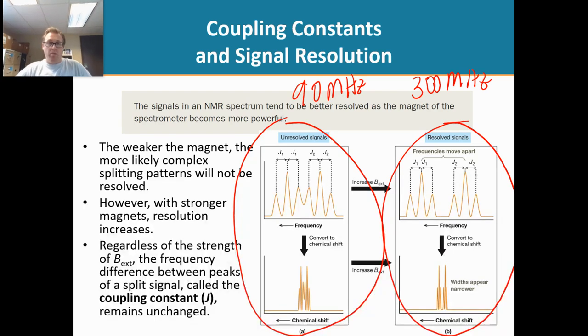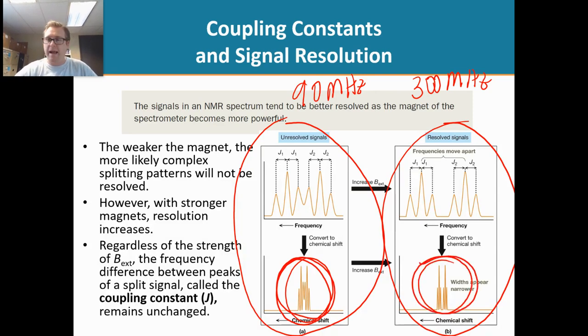So getting a more powerful magnet, paying the extra money, is going to offer us better resolution. You can't really tell what the splitting pattern is there. But with a higher resolution or a stronger magnet, we can see that those two signals are two triplets. It's not just one signal that's really, really messy.